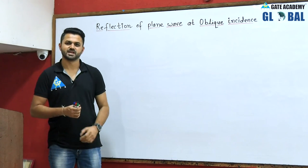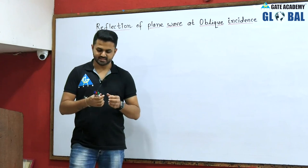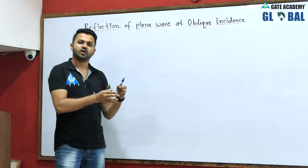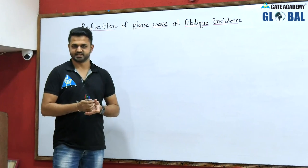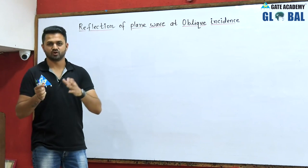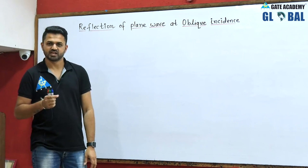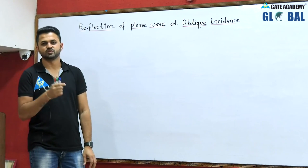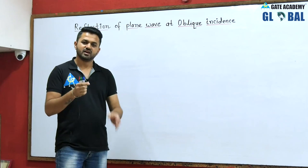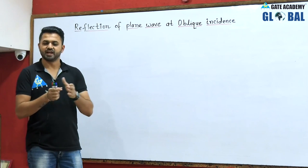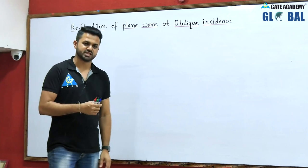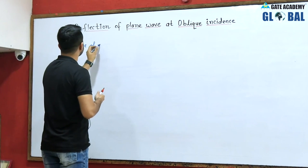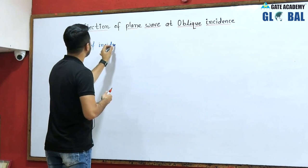The next topic is reflection of plane wave at oblique incidence. We will write the definition of oblique incidence and how to define it for two different types of polarization. As we studied normal incidence — where we derived formulas for reflection coefficient and transmission coefficient — we similarly need to derive those here. First, we define the plane of incidence, because oblique incidence is also referred to as the plane of incidence.